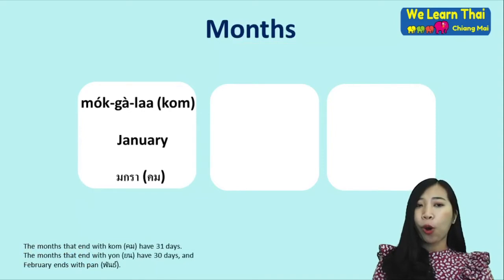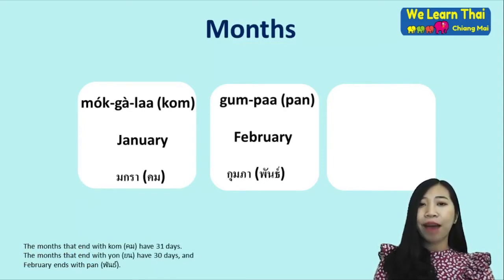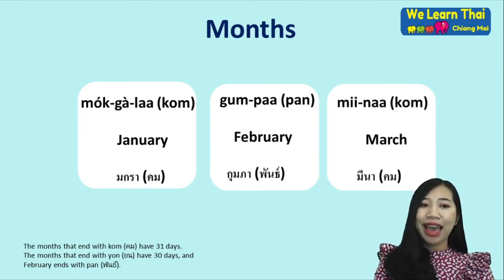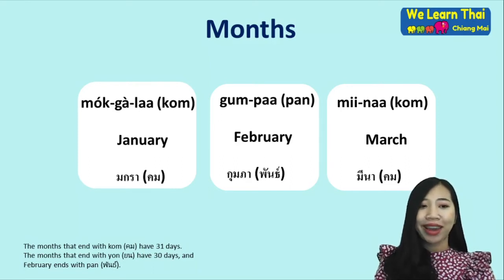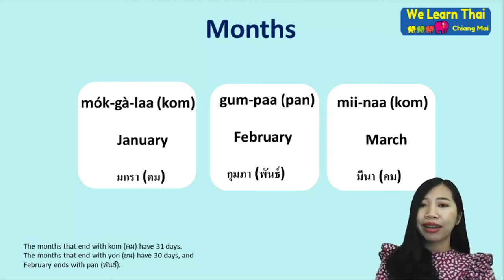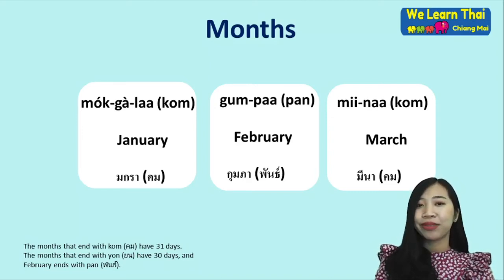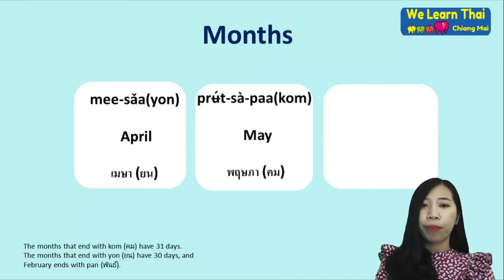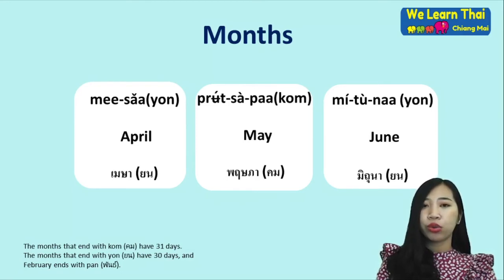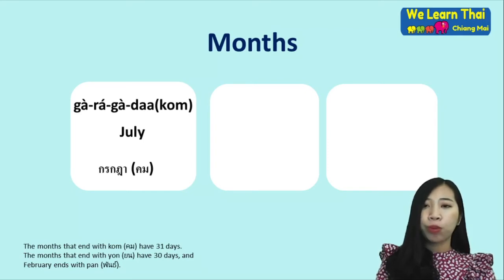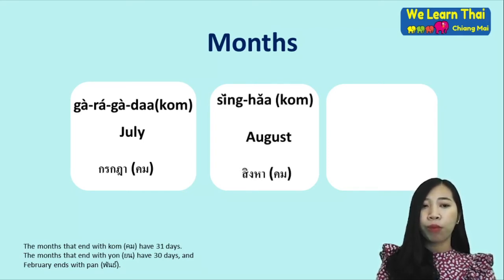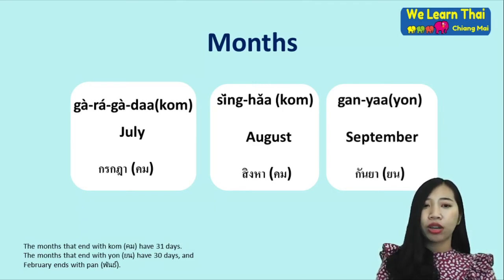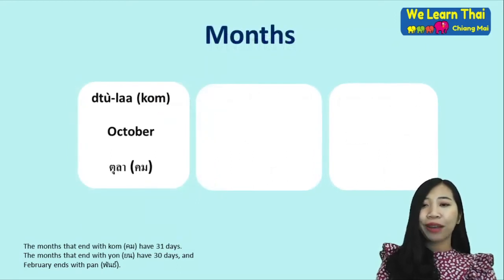For the months, the first one is mokgara khom — January. Months ending in khom have 31 days. Months ending in yon have 30 days. The month ending in pan has 28 or 29 days depending on the year. Meesayon — April, Phruetsaphakhom — May, Mithunayon — June, Karakadakhom — July, Singhakhom — August, Kanyayon — September, Tulakhom — October, Phruetsajikkayon — November.